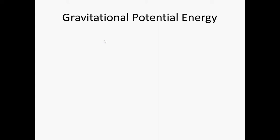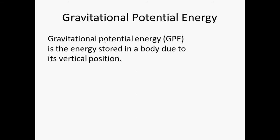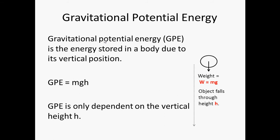What is gravitational potential energy? As explained in the previous lesson, gravitational potential energy is a form of work done. Gravitational potential energy, or GPE, is the energy stored in a body due to its vertical position. The equation is mass times gravitational field strength times height: GPE = mgh. GPE is only dependent on the vertical height.